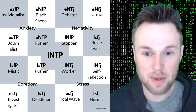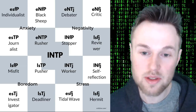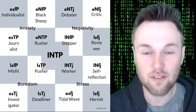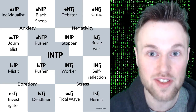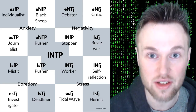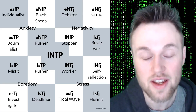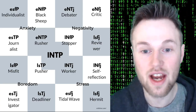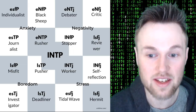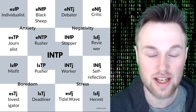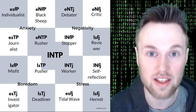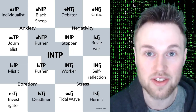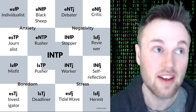If you understand the spectrum, that's the most important thing. Understand the four general directions of change inside of yourself — how anxiety, negativity, stress, and boredom can affect your personality type and affect your flow state.